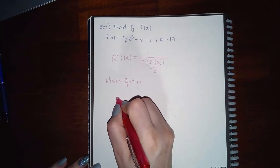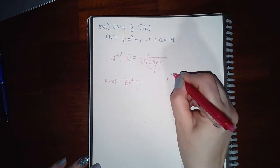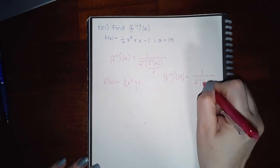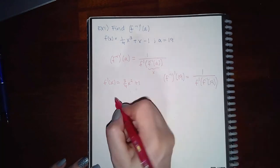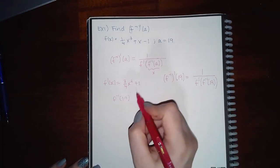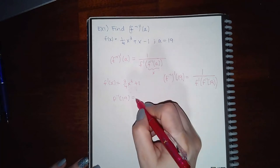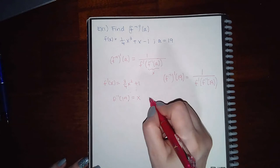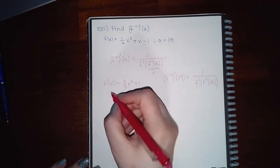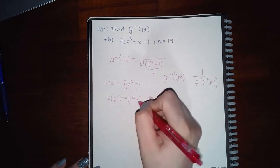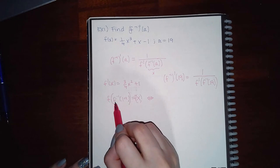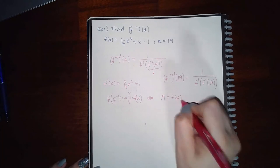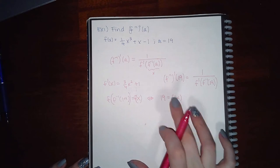We want to find f-inverse′(19), which requires f′(f-inverse(19)). So what is f-inverse(19)? If we call that x, and apply f to both sides, f and f-inverse cancel, giving f(x) = 19. We need to find the x-value where f(x) equals 19.